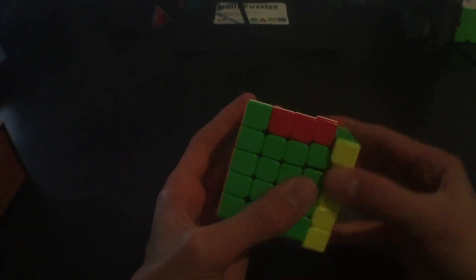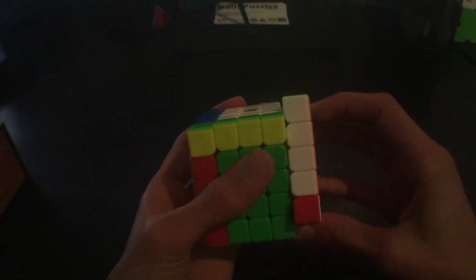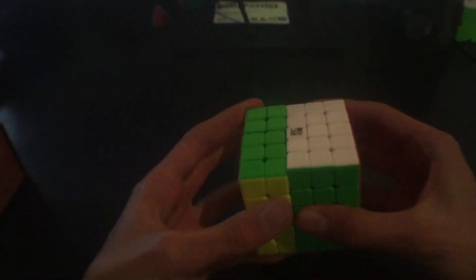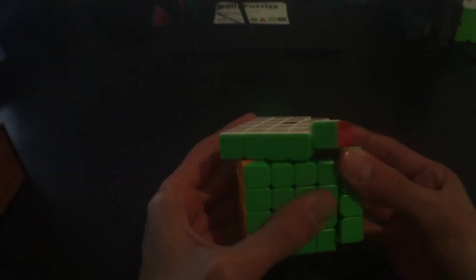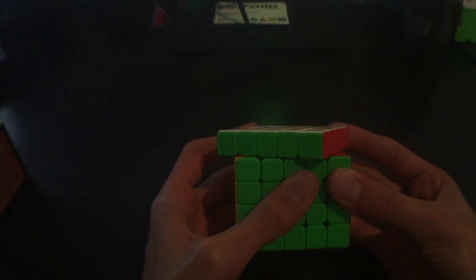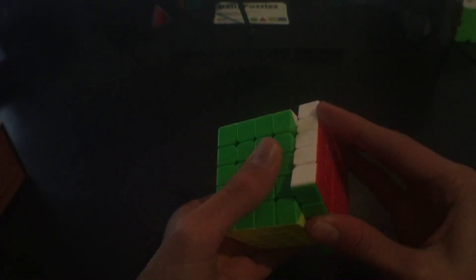This will need a lot of breaking in but it's getting really lubey now on the outside, it's getting hard to turn. Let's check the corner cutting. Okay that's really good. The corner cutting on both YJ cubes seem to be really good.